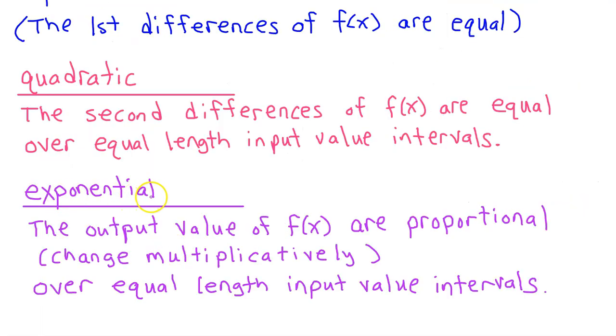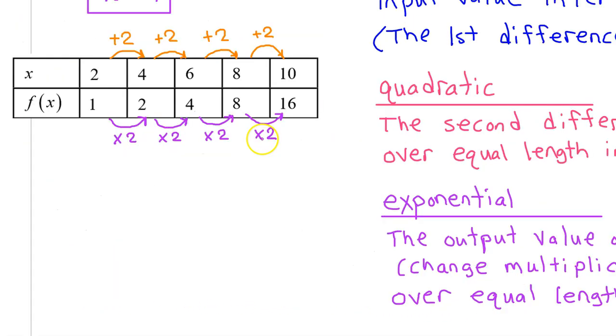An exponential model is best if the output values of f of x are proportional, in other words, change multiplicatively, over equal length input value intervals. That's exactly what we see. If you take any output value and multiply it by 2, it gives you the next output value. So the output values are proportional, or you can say that the output values change multiplicatively. Therefore, an exponential model is a good fit for f of x.